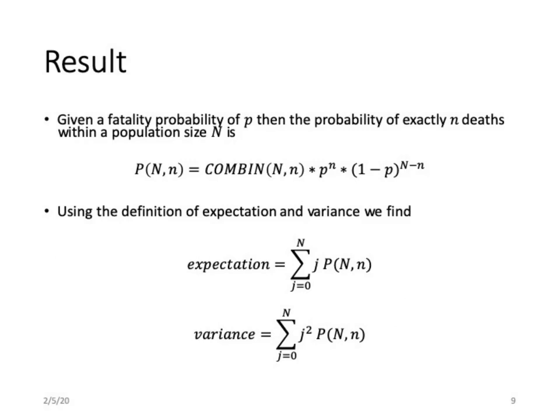This gives us our result: capital P as a function of capital N and lowercase n — the probability of there being exactly n deaths within a population of size N. Since this probability forms a proper normalized distribution, we can use it to calculate the expectation value and the variance. When writing out these definitions, be sure to include zero in your sums; if you don't include zero, you'll wind up with values significantly higher than expected.